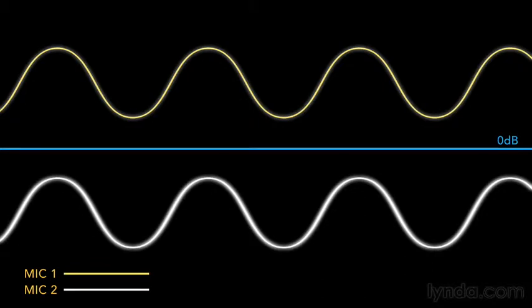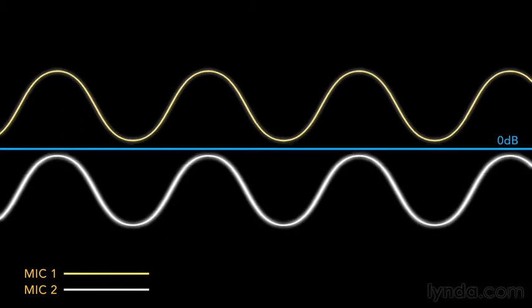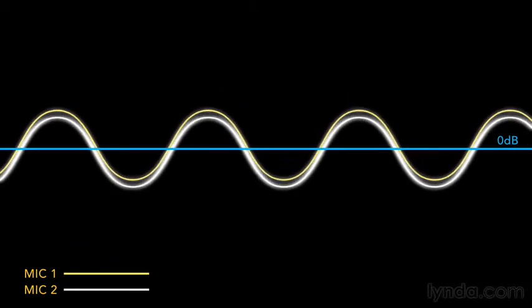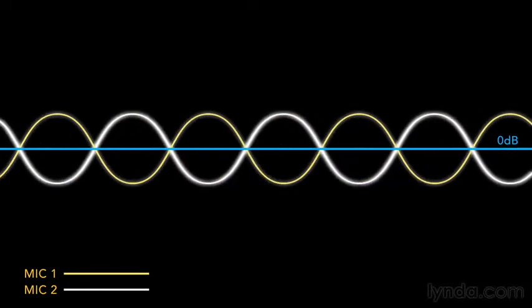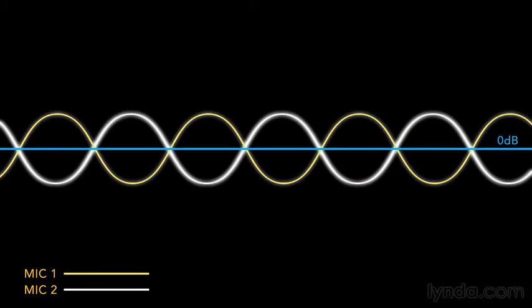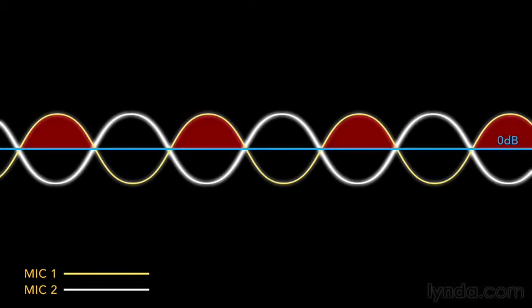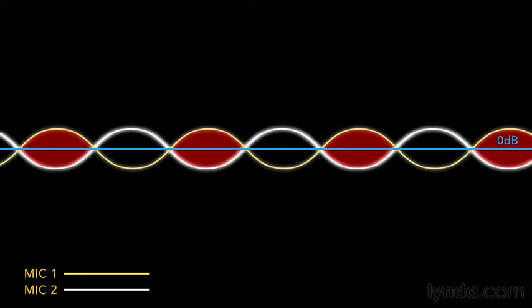So just what is phase anyway? Without getting into an intense technical explanation, it just means that the outputs of all microphones used on the session are pushing and pulling together as one. If one mic is pushing while another is pulling, they cancel each other out at certain frequencies. When mic number one signal peaks, mic number two signal valleys. They cancel each other out at that frequency, and the result is a very weak-sounding signal when mixed together.